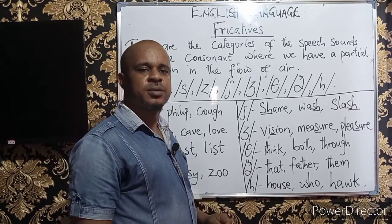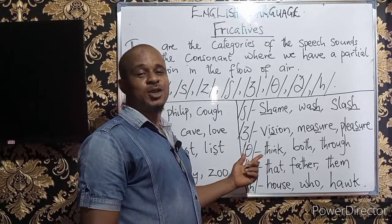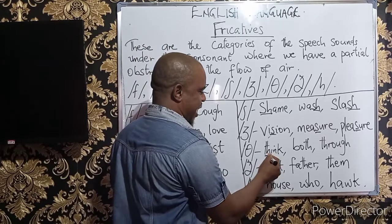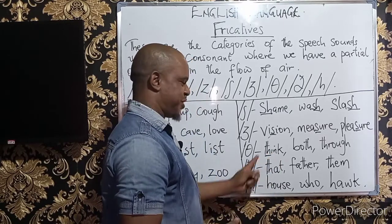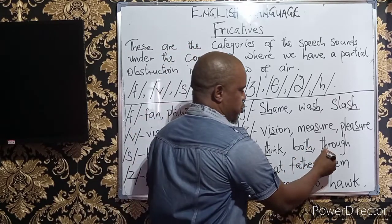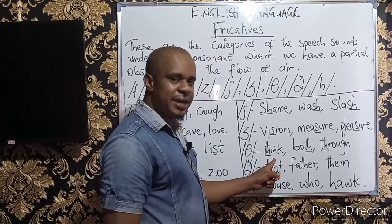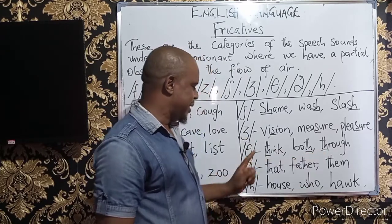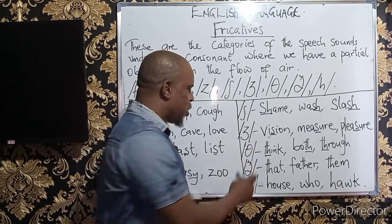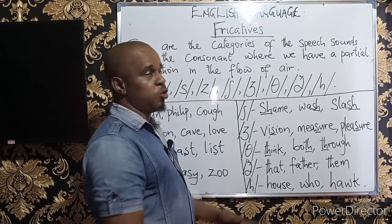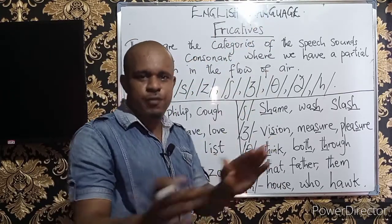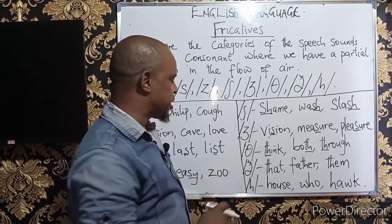The next symbol looks like the mathematics theta. It is voiceless, and we have words like 'think,' 'both,' and 'through.' The voiced counterpart has almost the same pattern of articulation — remember, they are grouped into voiced and voiceless fricatives in the consonant sound.